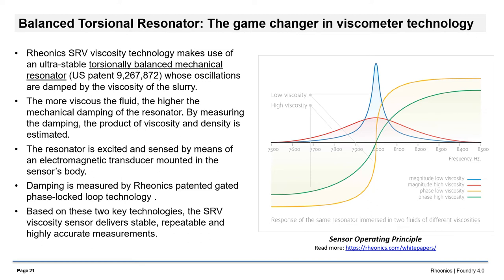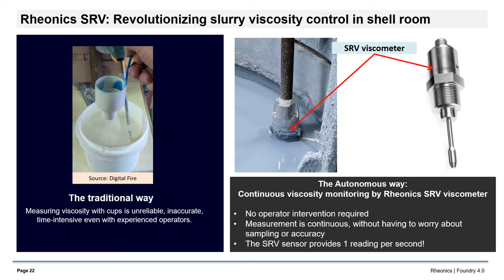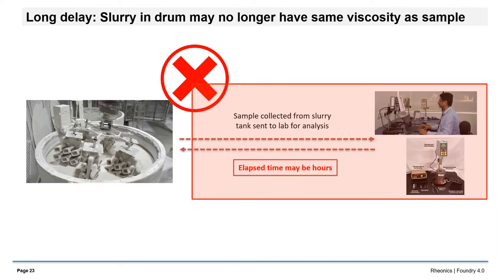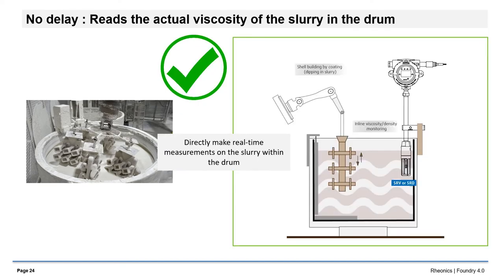The SRV resonator is unique, because it is balanced, like a torsional tuning fork, to minimize its interaction with its environment. It maintains its accuracy and calibration no matter where or how it is installed. The SRV can be easily mounted on the slurry tank without interfering with other equipment. It provides continuous measurements, which show the instantaneous condition of the slurry once a second, as well as indicating its temperature. No interruption of the casting process to get a viscosity reading. SRV measures viscosity and temperature in real time, with no interruption of the casting process to pull samples, and no delay between measurement and reading.